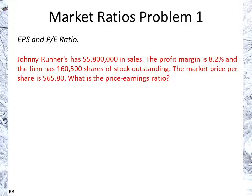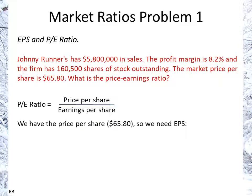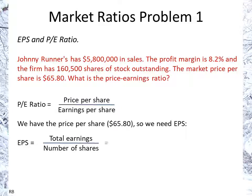To calculate the price-earnings ratio, we start with the fact that the price-earnings ratio is simply the price per share divided by the earnings per share. We have the price per share of $65.80. Now we calculate the earnings per share — we don't have it directly, but we can get it indirectly. We have sales and we have the profit margin, and since profit margin is net income over sales, sales times profit margin gives us total net income.